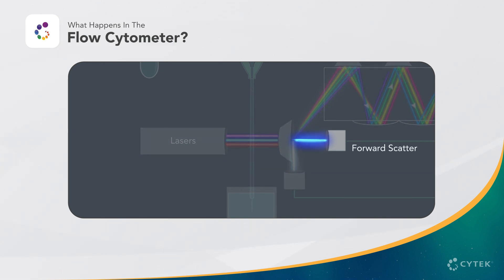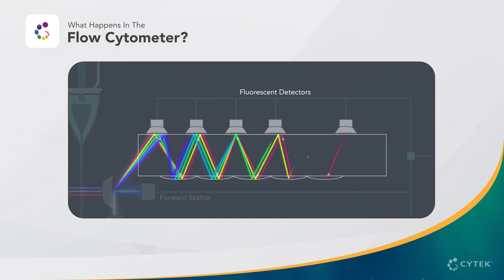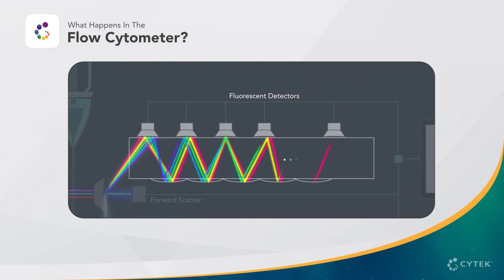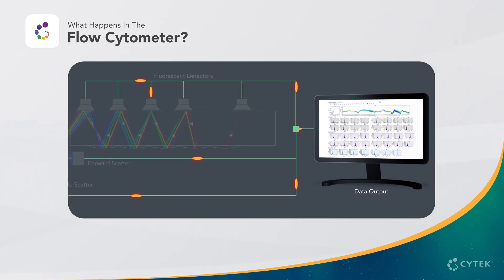Forward scatter is the measurement of laser light scattered by the cell in the forward direction, and is correlated with cell size. Side scatter is a measurement of laser light scattered at a 90 degree angle, and provides insights into the granularity or complexity of cells. The light emitted from the fluorophores are directed to fluorescent detectors, with the number and arrangement depending on the cytometer configuration. Photons are then converted to electronic signals and processed into data, which is displayed in real-time within data plots and saved to an FCS file for subsequent analysis.